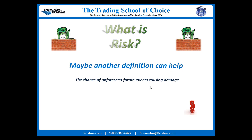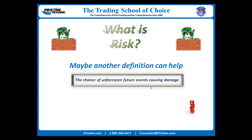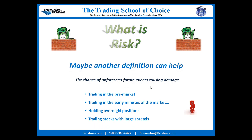There's another definition of risk where it is defined as the chance of unforeseen future events causing damage. This one might be helpful. If you trade with a fixed risk amount, are there other events that could cause you to exceed that risk amount? There are certain unforeseen things in trading that can make you exceed the expected loss — things such as trading in the pre-market or in the early part of the day, or holding positions overnight. These can lead to unexpected losses that exceed the amount you intended to lose on a particular trade.